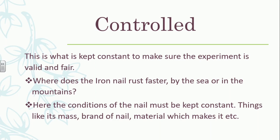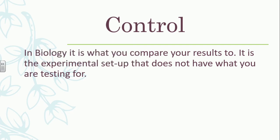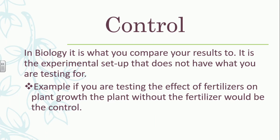Our next variable is the control variable, which mostly applies to biological experiments. In biology, this is what you compare your results to — it's the experimental setup that does not have what you're testing for. For example, if we're testing the effect of fertilizers on plant growth, the plant without the fertilizer would be the control. One plant gets fertilizer and the other does not, and we compare our results to the plant without fertilizer.